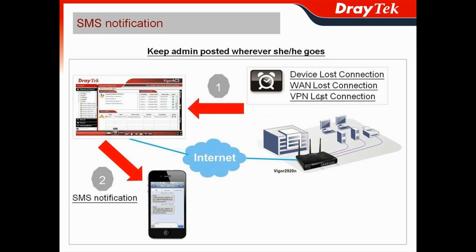For the VPN loss connection, it depends on the model. For the Vega 2920N, it has 32 VPN tunnels, so it depends on which VPN tunnel, based on the profile loss connection you configure.